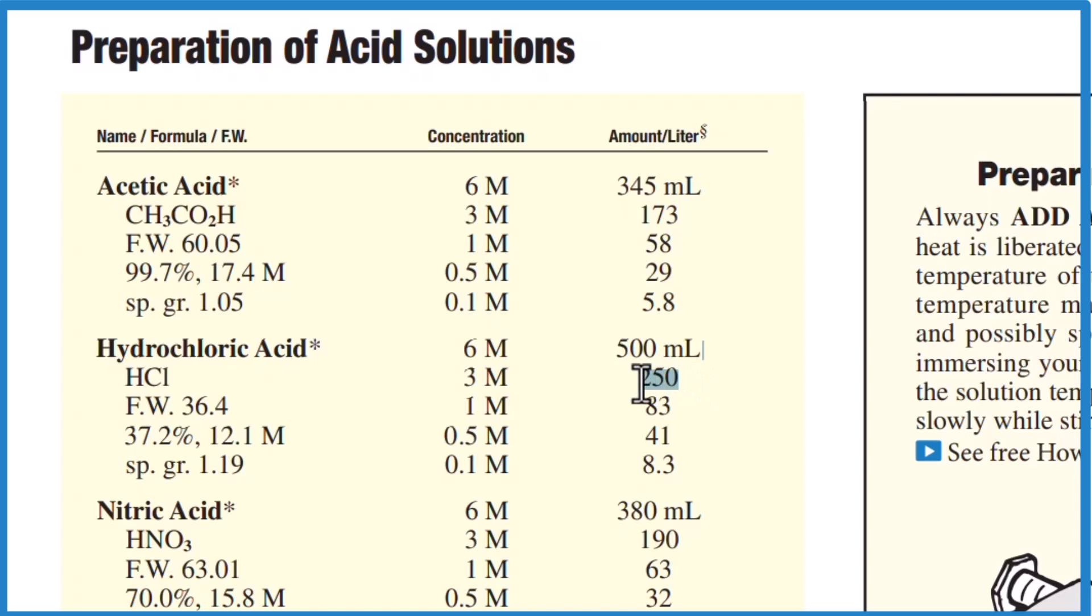You add 250 milliliters of that, and then you fill it up with water to the one liter mark. And you do it slowly because it's an exothermic reaction. So that's one way. If you want to make three molar hydrochloric acid solution, you can follow the recipe.